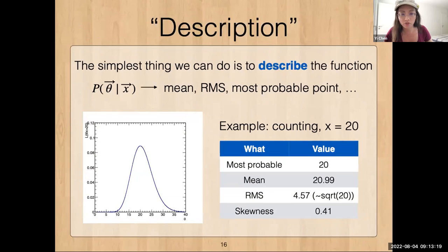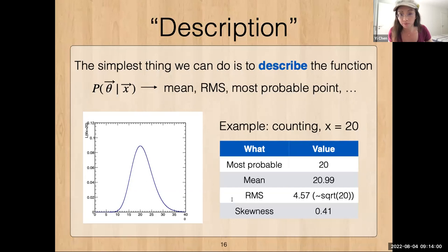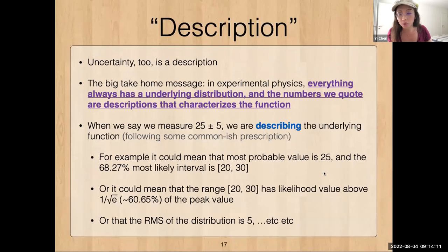Now that we have either the likelihood or the posterior, we can decide what to do with it. The simplest thing is to describe the function — we say something about what the function looks like. We can talk about the mean, RMS, most probable point, and so forth. For example in a counting experiment with x equals 20, the most probable value is 20, the mean is a bit above 21, and the RMS is about 4.5.